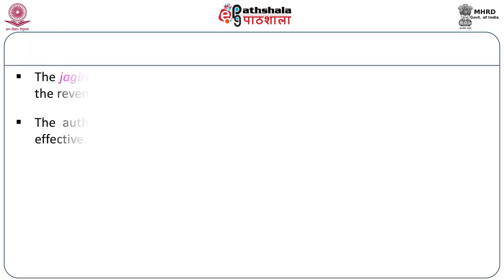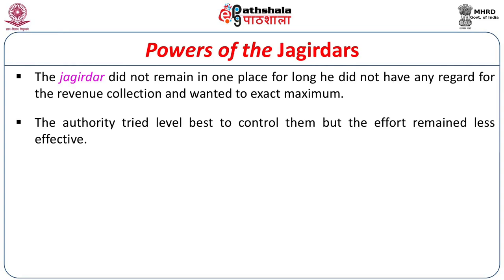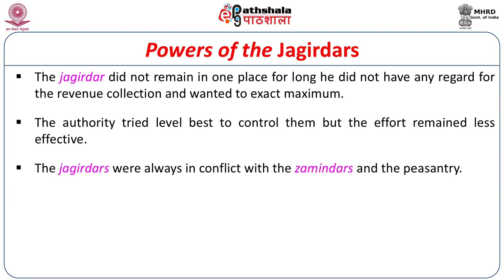The Jagirdars did not remain in one place for long, had no regard for revenue collection, and wanted to exact the maximum. This attitude complicated the situation because they had no attachment to the peasants or the area, and their aim was to maximize their gain. The authority tried its level best to control them, but the effort remained less effective. The Jagirdar was always in conflict with the zamindar and the peasantry.